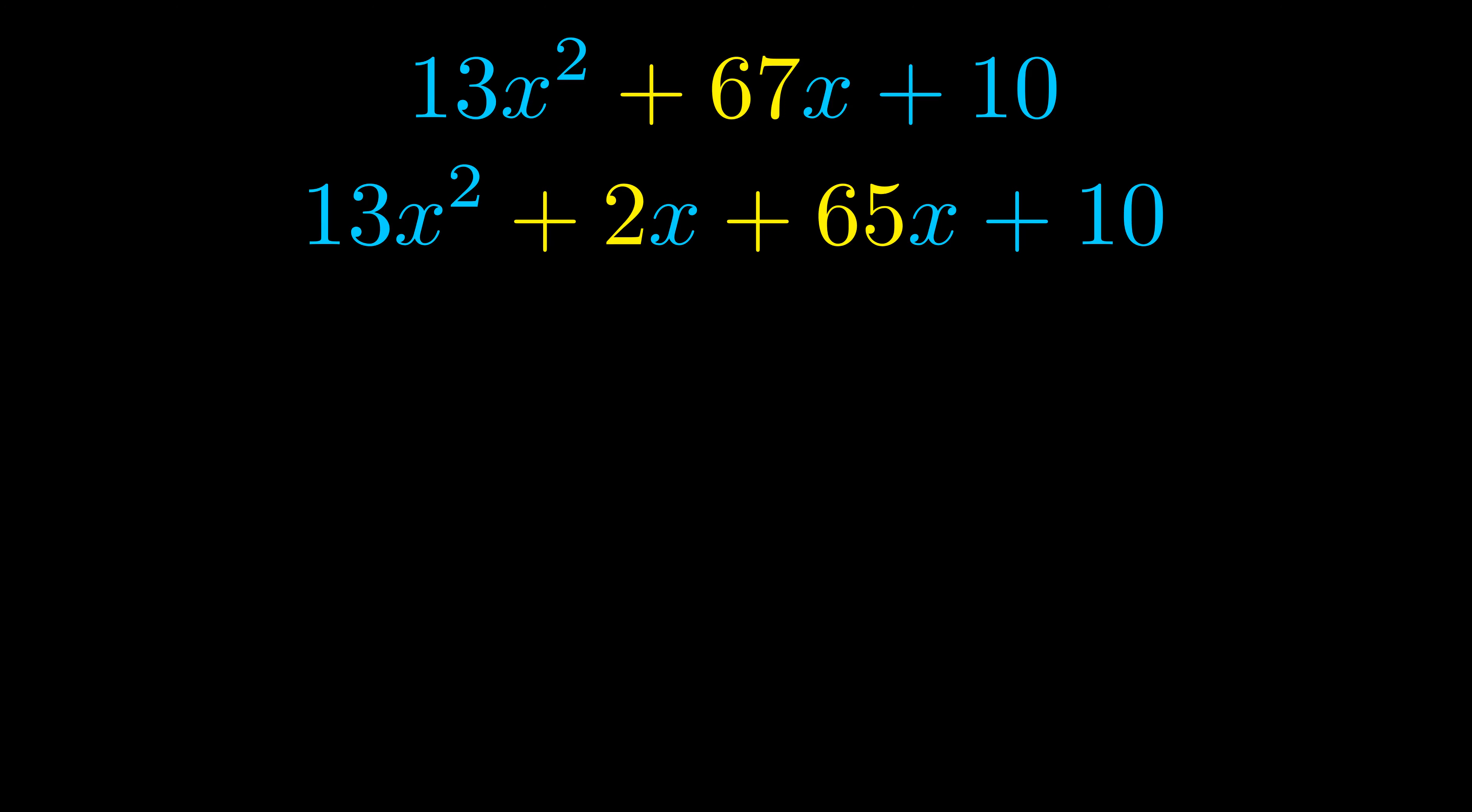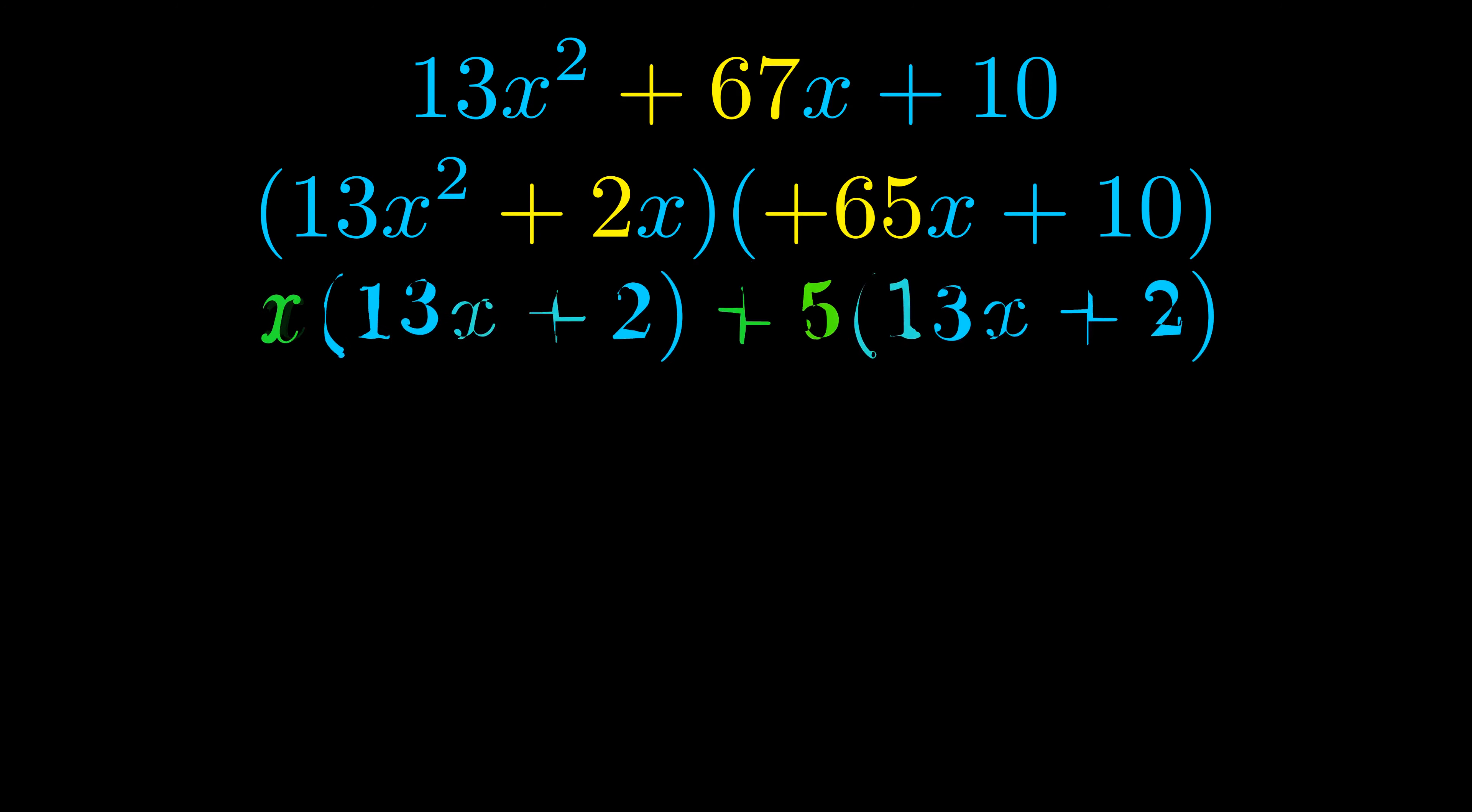Once we've done this, we go ahead and we put parentheses around the first term and the last term. And we do that so that we can take the greatest common factor out of both terms. We can see the greatest common factor is now outside in green.